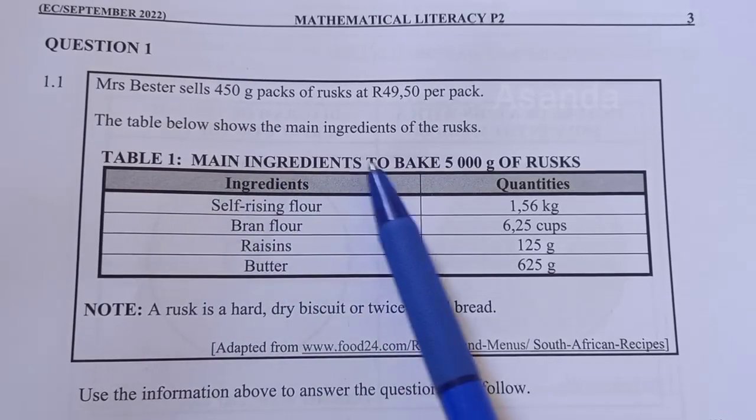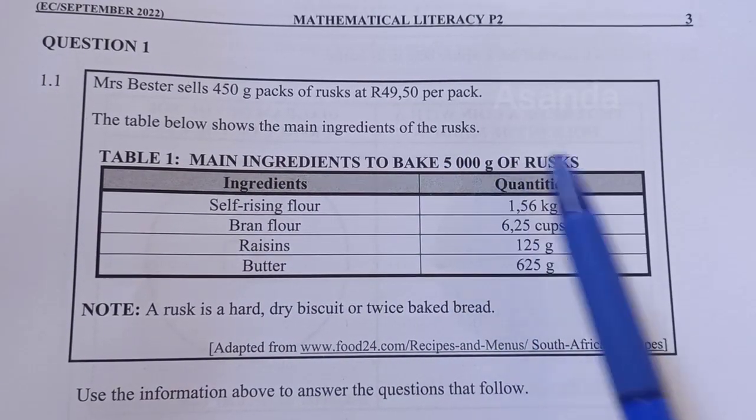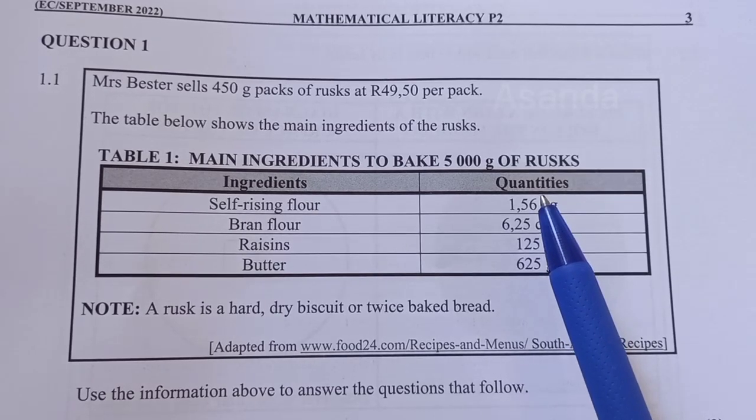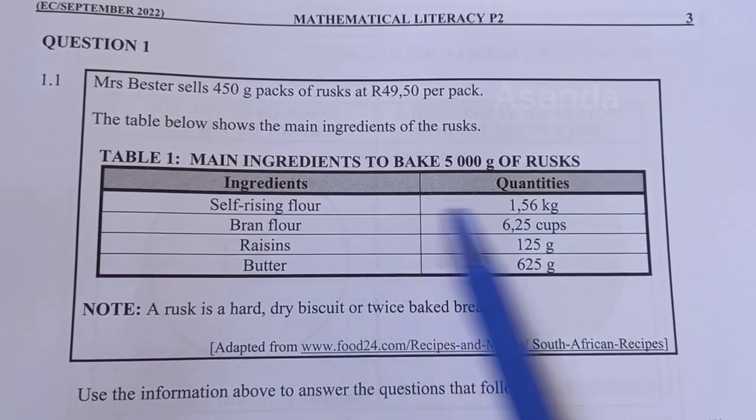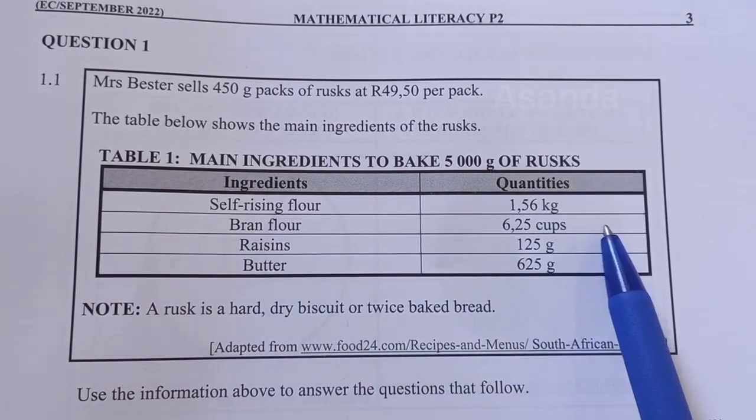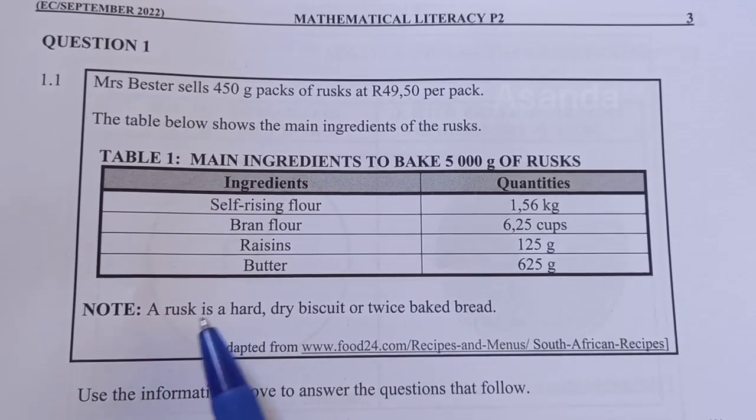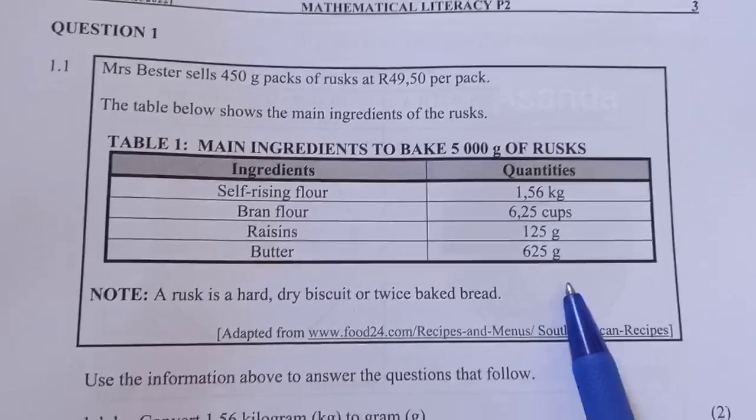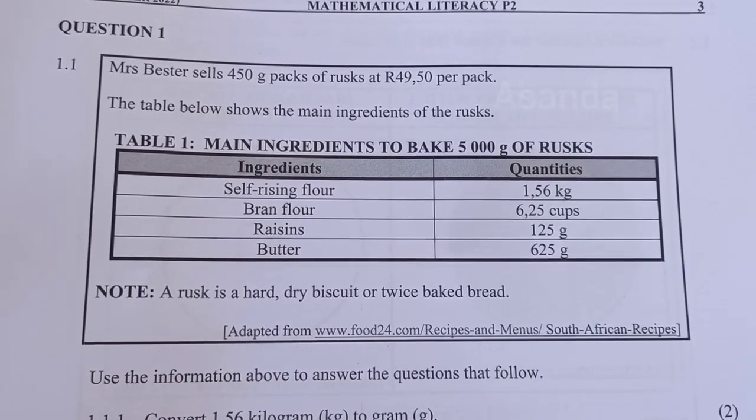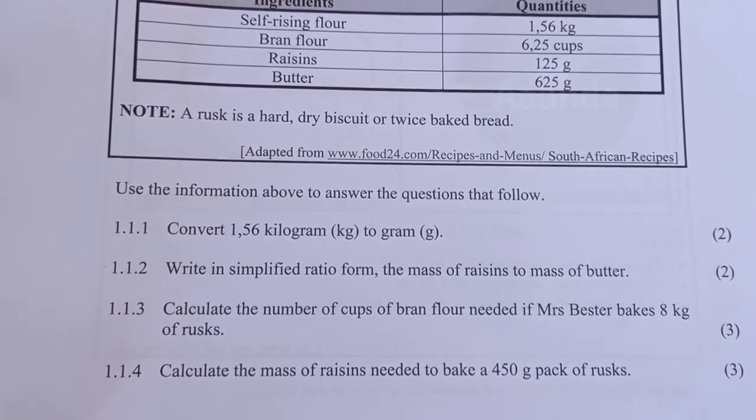We're looking at the main ingredients, and the packet is 5,000 grams. So for the 5,000 grams of rusks, you will get self-raising flour, which is 1.56 kilograms, bran flour, raisins, and butter. Note that a rusk is a hard, dry biscuit or twice baked bread. Oh, I didn't know they bake it twice! Use the information above to answer the questions that follow.